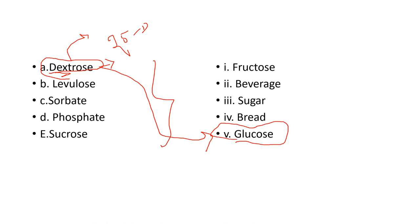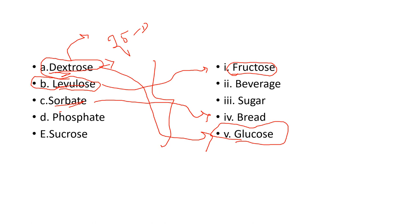Levulose is similar to fructose and is sometimes called fruit sugar. Sorbic acid is a preservative used to preserve bread. Phosphate is added to beverages for preservation and quality. Make tables classifying monosaccharides, disaccharides, polysaccharides, essential and non-essential amino acids, and fat-soluble vs water-soluble vitamins — these are frequently tested directly.